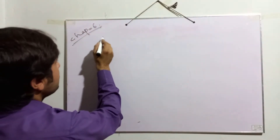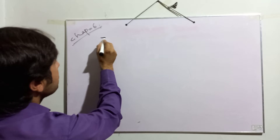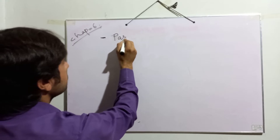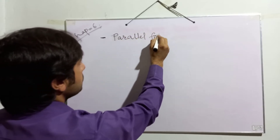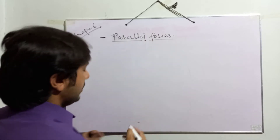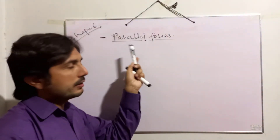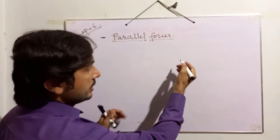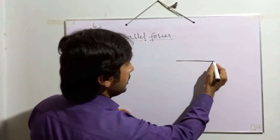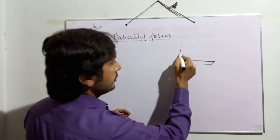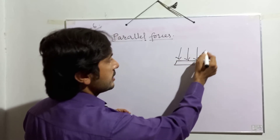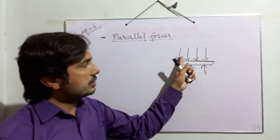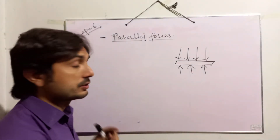In chapter number six, the first thing we are going to learn today is about parallel forces. As the name suggests, parallel forces are forces which never meet each other. Let's suppose this is a body — if the forces acting on this body are in this direction, or even in this direction, such forces are known as parallel forces.